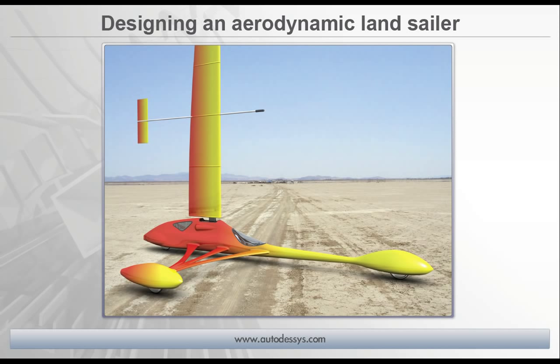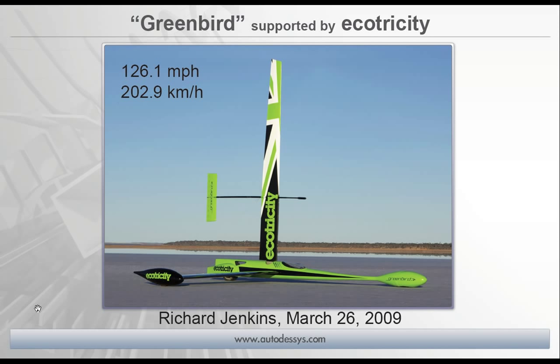The type of land sailor we're talking about here is one that's capable of going well over 100 miles per hour using only the wind. As a side note, the current land sailor speed record is held by Richard Jenkins — he broke the record with a speed of 126.1 miles per hour in March of 2009 on a dry lake bed in California.